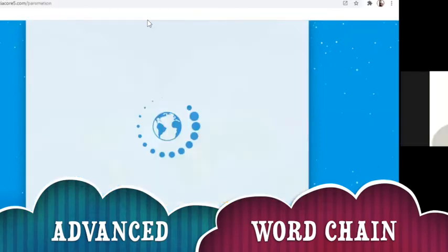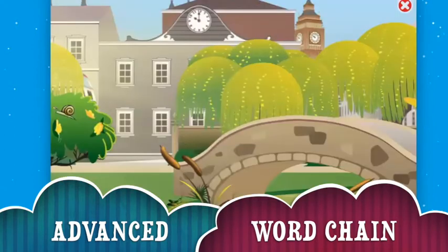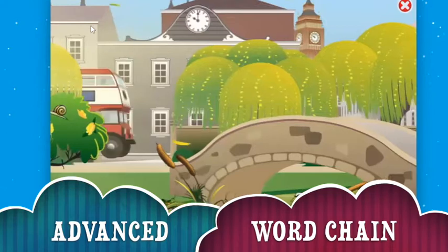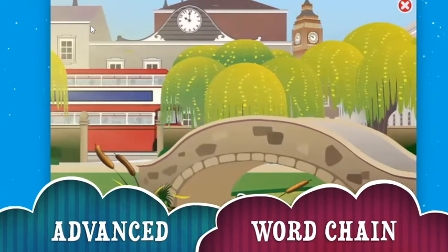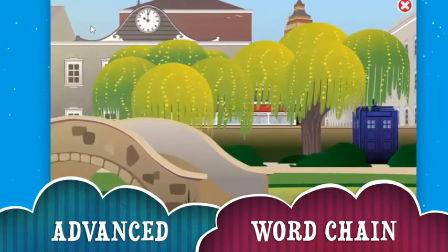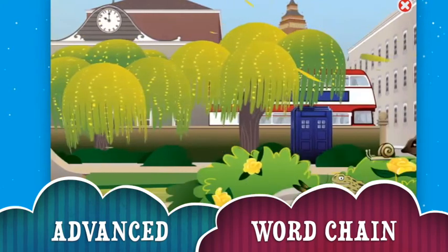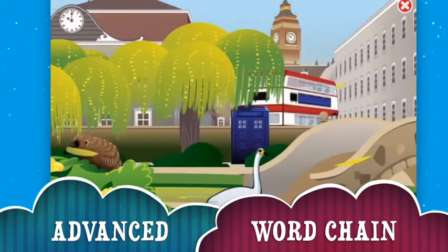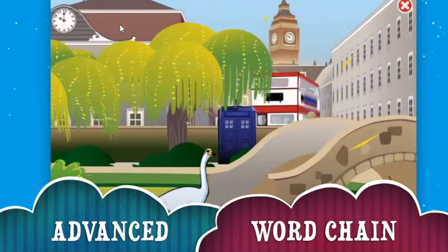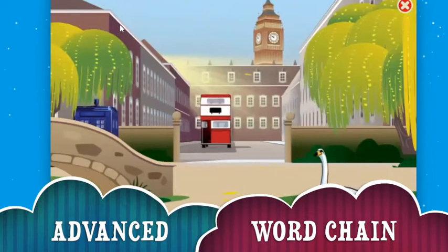It could be the beginning of the letter or the end of the letter, so that they can understand and capture that word in their brain. A good example of the advanced word chain: if you have 'car,' and by changing the last letter, which is R into P, you can make 'cup.' So car into cup — that's why we call it an advanced word chain.